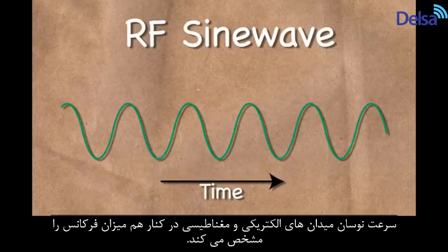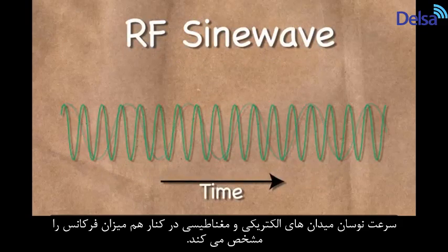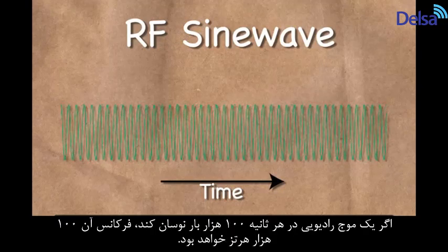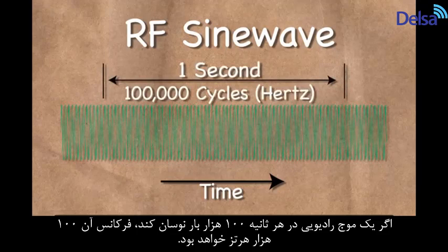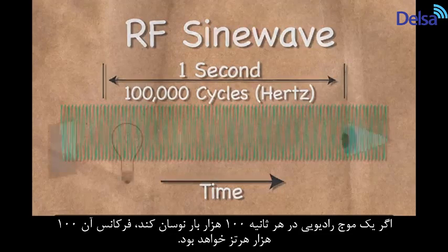How quickly the electric and magnetic fields vary in intensity, or oscillate, determines their frequency. If a radio wave passes through a complete cycle 100,000 times per second, then its frequency is said to be 100,000 Hz.